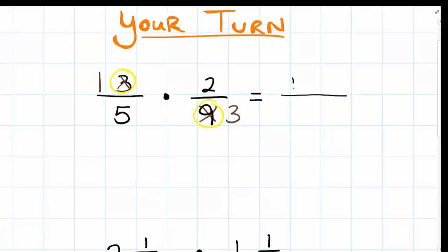So my new multiplication problem is 1 times 2 over 5 times 3. And when I multiply this, 1 times 2 and 5 times 3, I'm going to get the reduced correct answer of 2 fifteenths. If you got that correct, nice job.